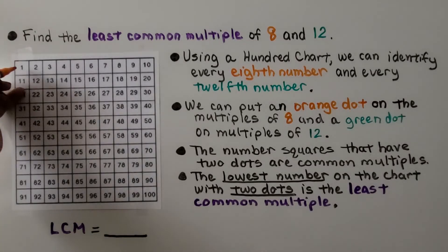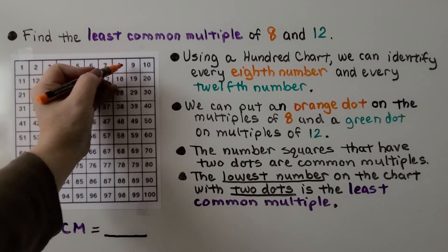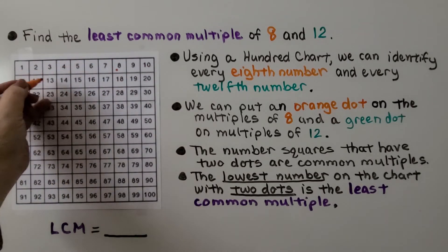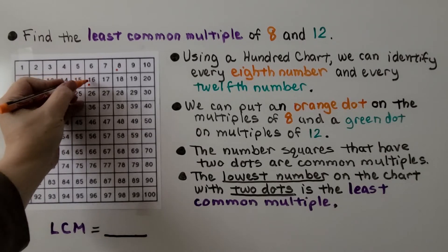So we start by counting 8 squares. That would put us at 8. We count 8 more. That puts us on the square 16.